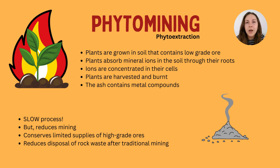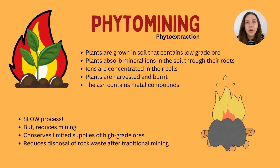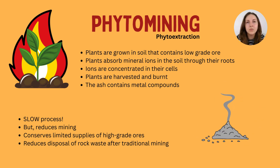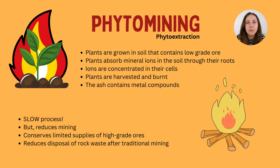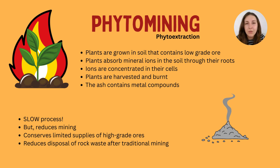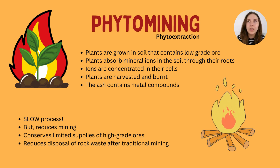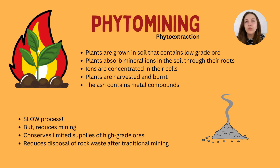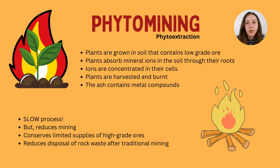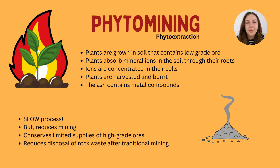Phytomining is a very slow process, but it does reduce the mining effort and conserves limited higher grade ores that would otherwise be used first. However, burning plants releases carbon emissions into the atmosphere through combustion, which can increase the greenhouse effect. Cutting down plants that absorb CO2 through photosynthesis also contributes to this. On the positive side, it reduces the disposal of rock waste from traditional mining. There are pros and cons to everything — this is an example of that.